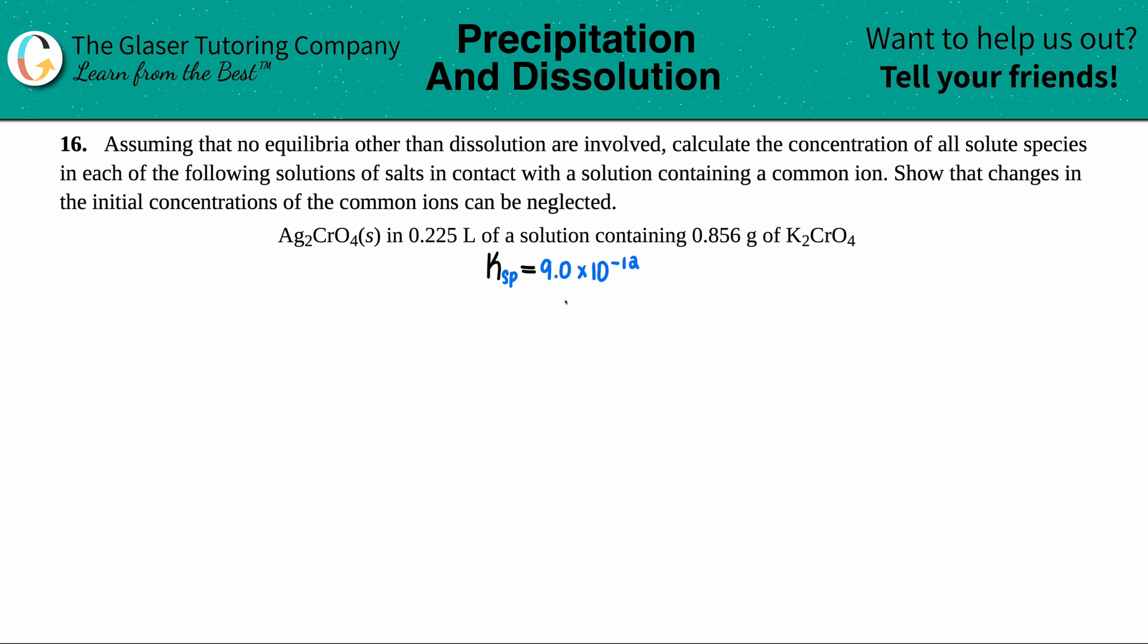Number 16. Assuming that no equilibria other than dissolution are involved, calculate the concentration of all solute species in each of the following solutions of salts in contact with a solution containing a common ion, and then show that the changes in the initial concentrations of the common ion can be neglected.